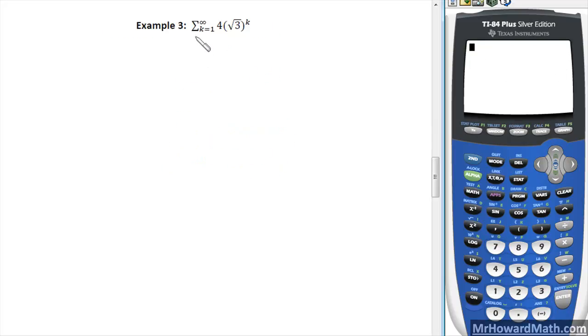Okay, example 3. We have our sigma notation, our summation notation here, and then they give us our rule. It's all about the r value for an infinite geometric series. The r value is the part raised to the exponent, so our r value equals the square root of 3.